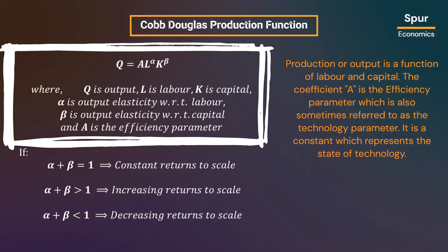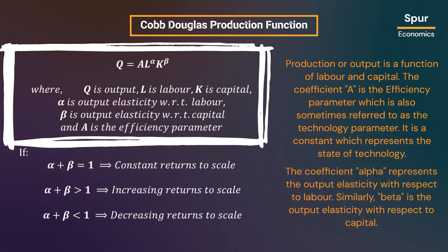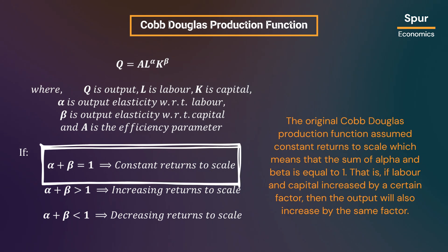The coefficient A is the efficiency parameter, which is also sometimes referred to as the technology parameter. It is a constant which represents the state of technology. The coefficient alpha represents the output elasticity with respect to labor. Similarly, beta is the output elasticity with respect to capital.